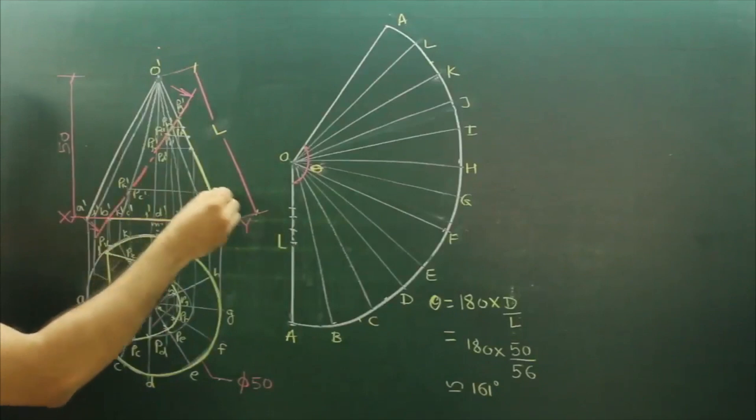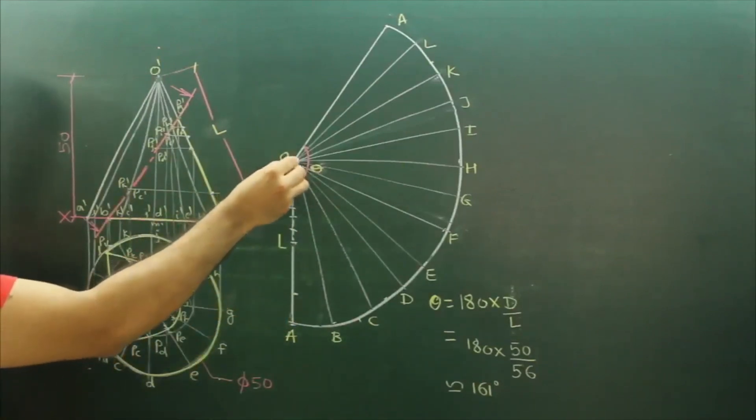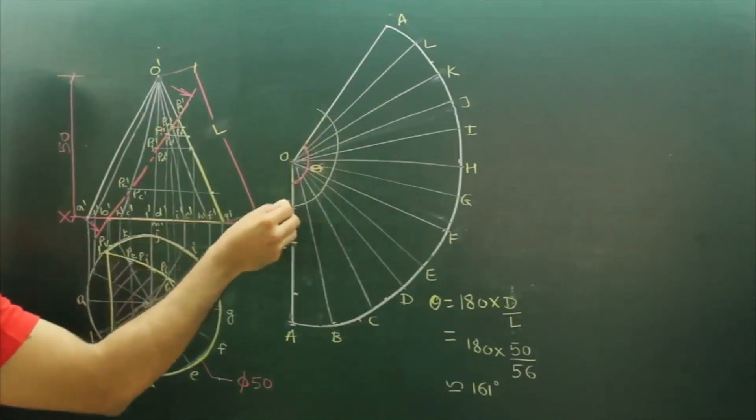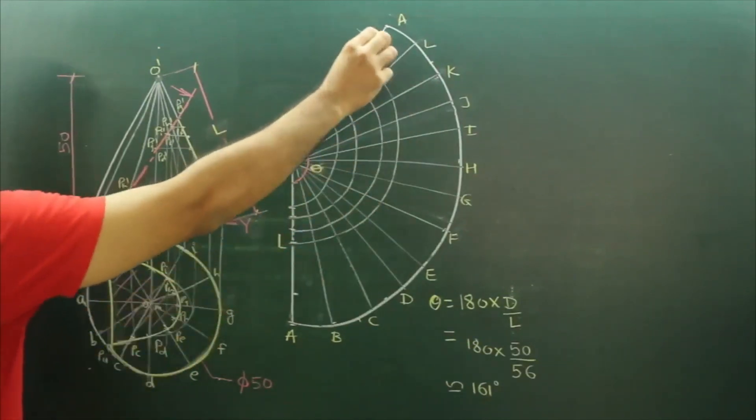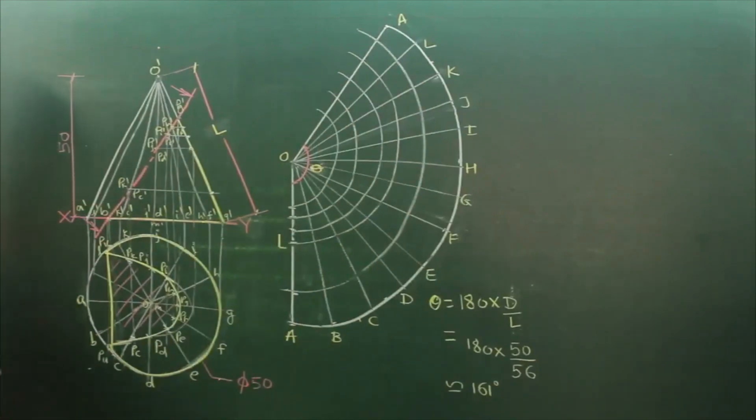Always remember: take the distance to the true length and then you rotate. You rotate from O, you rotate all this. You'll get something like this, then you have to mark.